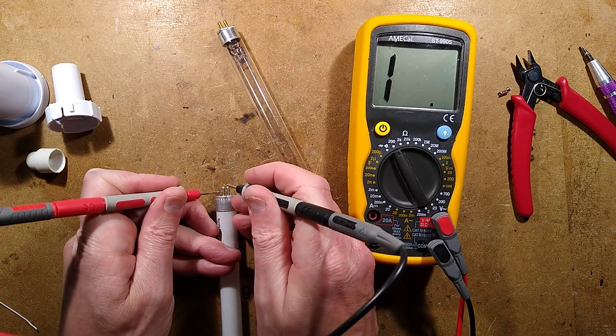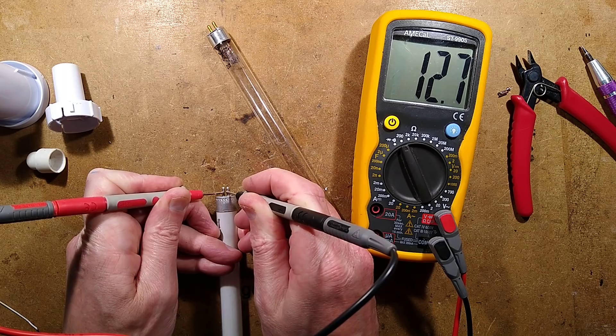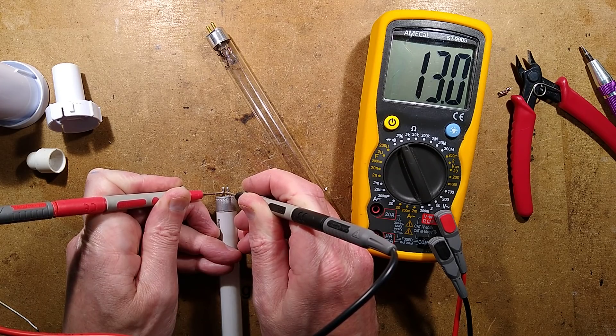So here is a standard tube. And the resistance of the heaters is round about 12 to 13 ohms.